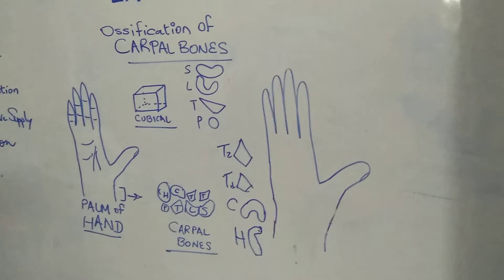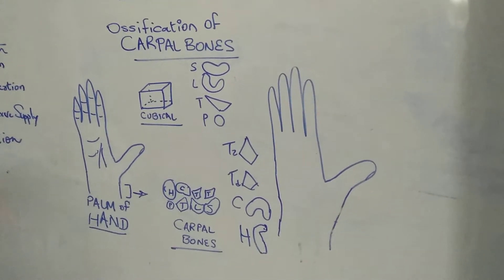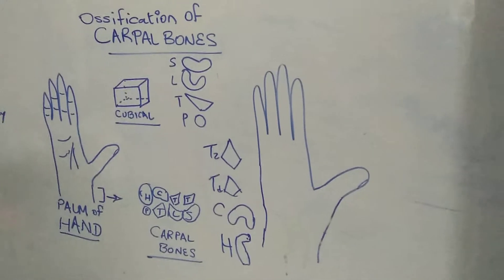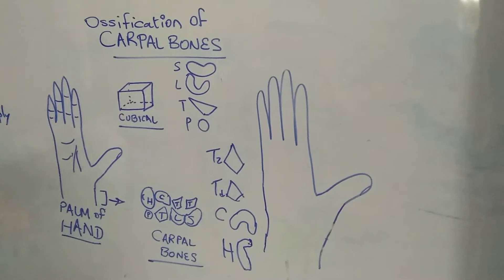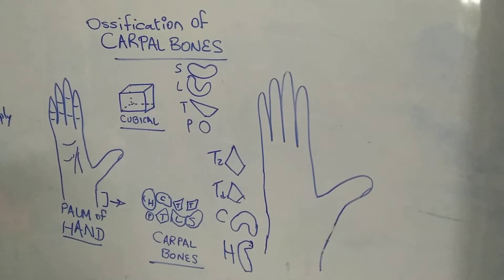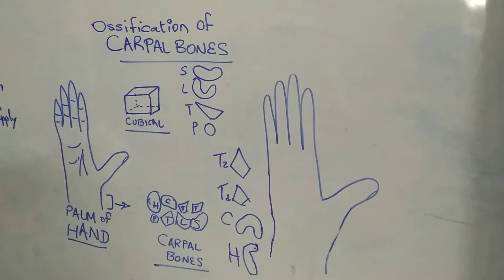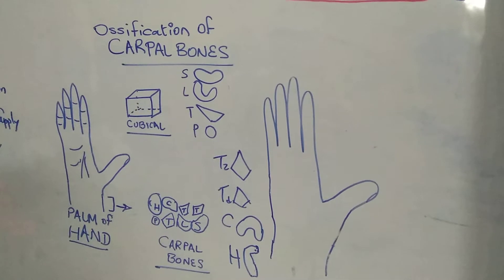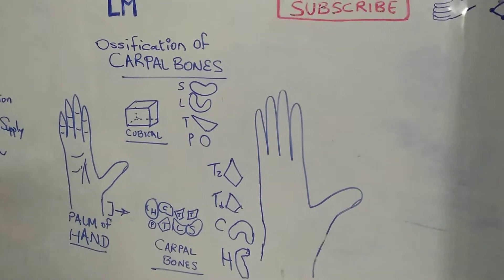So what are these carpal bones? These are the bones which are present at the proximal part of the palm, at the junction between the forearm and the palm of the hand — that is, to be more specific, in the wrist region.